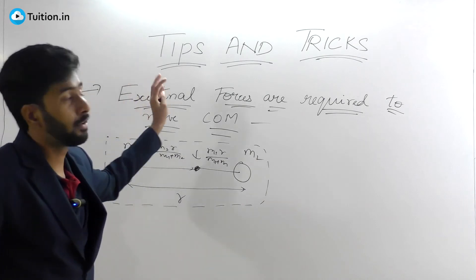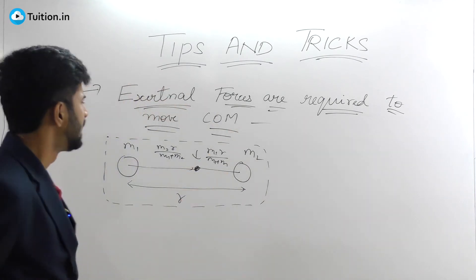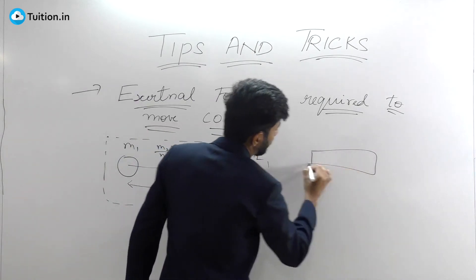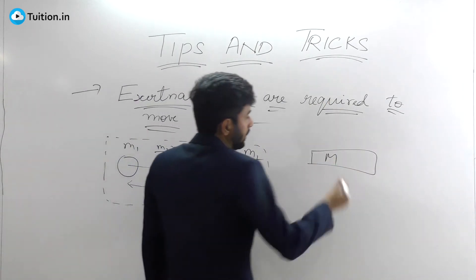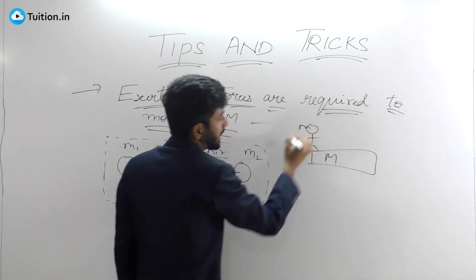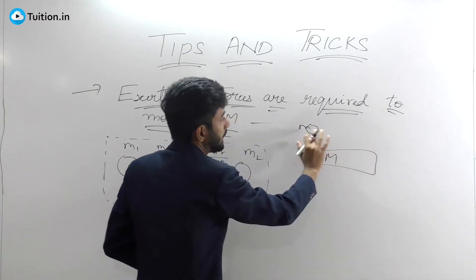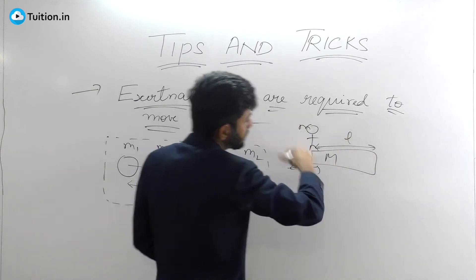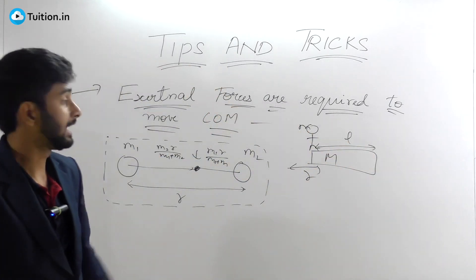Why? Because there is no external force present to move the center of mass. A lot of other problems can be solved using this particular concept. Let's say you have a capital M bar here, you have a boy of certain mass m here. He starts moving on this. If he moves by a distance l, then how much will this move by r?